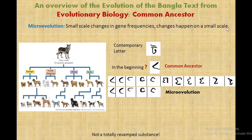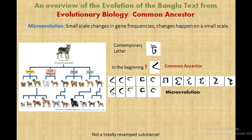Now look at this letter: this is the contemporary letter, but this is how it was in the beginning — this is the common ancestor. In microevolution, the change happened on a small scale. From this common ancestor we can see a change on the second phase, third phase, fourth phase, and fifth phase — a small scale change where we can still trace it back to its original form and find some similarities. This is what microevolution is.